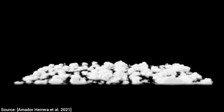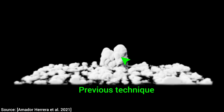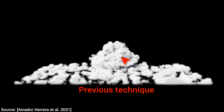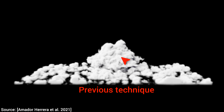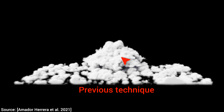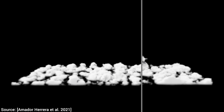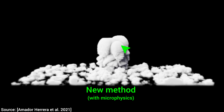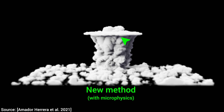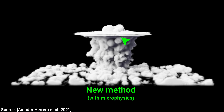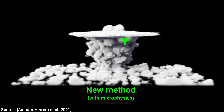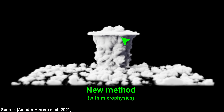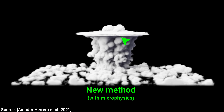Now, previous methods were also able to do something like this, but something was missing. For instance, this looks great, but the buoyancy part is just not there. Well, let's look at the new method and find out together. Yes, the new work simulates the microphysics of water, which helps modeling phase changes and buoyancy properly. You are seeing the buoyancy part here. That makes a great difference.